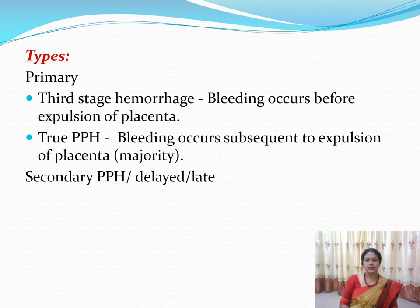Labor has three stages. The first stage is up to full dilatation of the cervix. The second stage is from full dilatation to delivery of the baby. The third stage is from delivery of the baby to delivery of the placenta. The main event in the third stage is placental delivery, and bleeding occurring during this stage is called third stage hemorrhage.